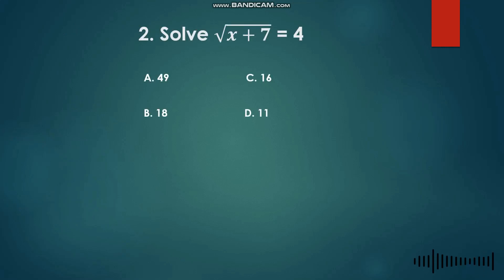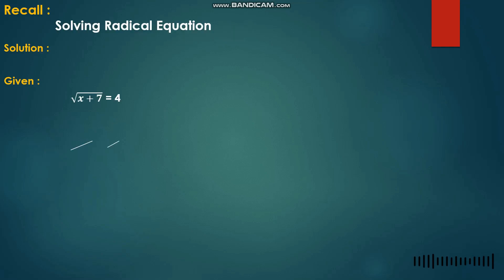Number 2: Solve for x — square root of (x + 7) is equal to 4. A) 49, B) 18, C) 16, D) 11. For this given number 2, we again have a radical equation.